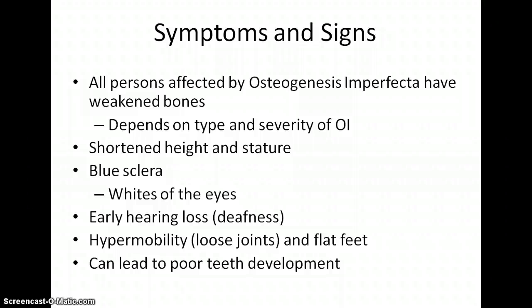Everyone affected with this disease has weakened bones, so there will be fractures in their lifetime. The severity of the weakness depends on the type of OI they have. General symptoms include shortened height, blue sclera in some cases, early hearing loss, hypermobility from loose joints, flat feet, and poor teeth development.